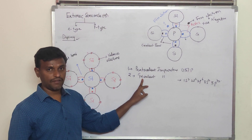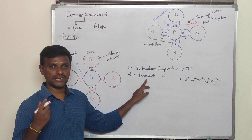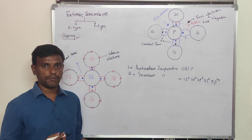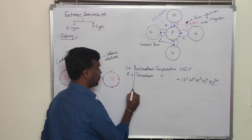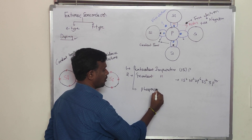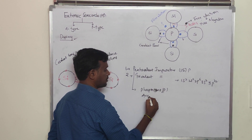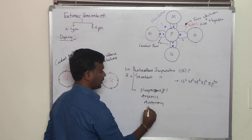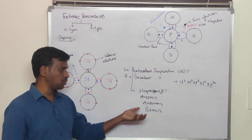Trivalent impurities consist of three valency electrons in their outermost shell or valency shell. For pentavalent impurities, we consider the fifth group elements of the periodic table. Examples of pentavalent impurities are phosphorous, arsenic, antimony, and bismuth.